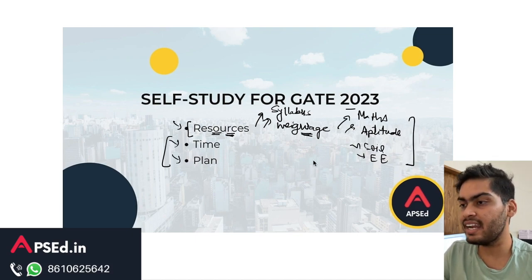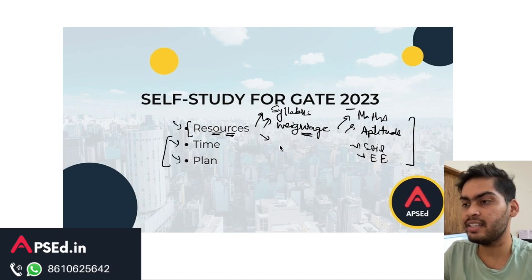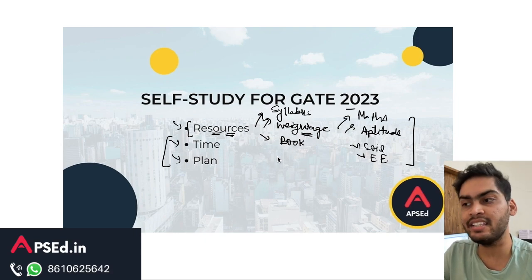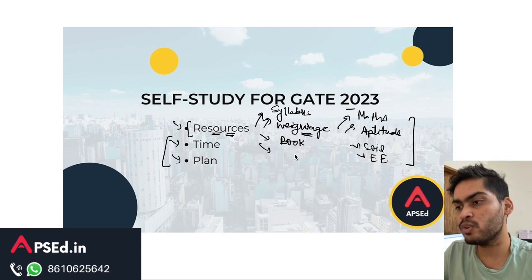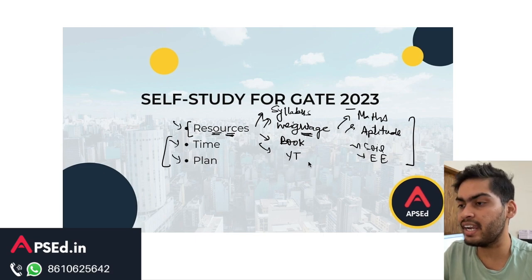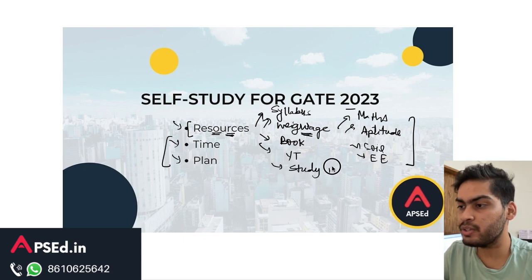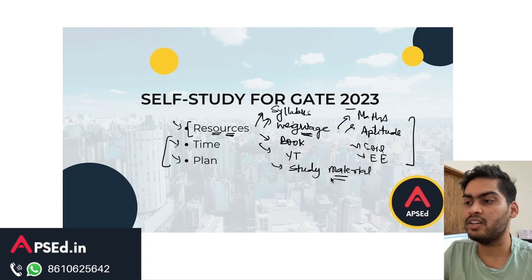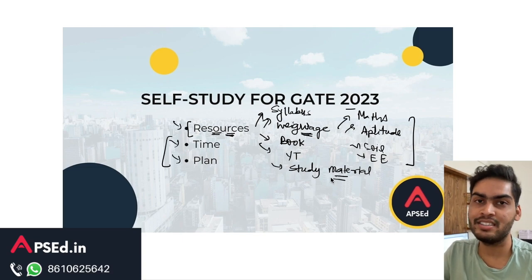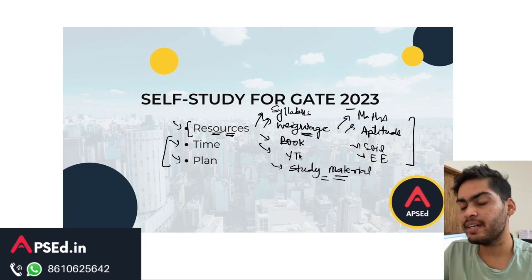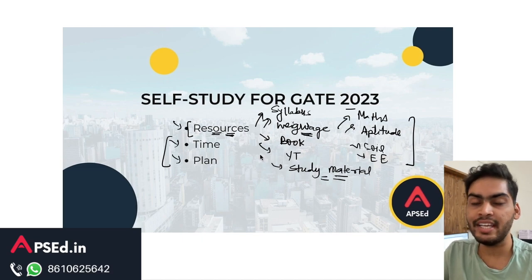Understanding weightage is very important. The next resource is the source through which you will be studying each subject — this can be books, a YouTube channel you follow, study material you bought or borrowed from a friend, or material you accessed from the internet. All of these can be part of your study sources.